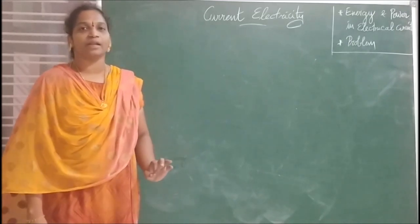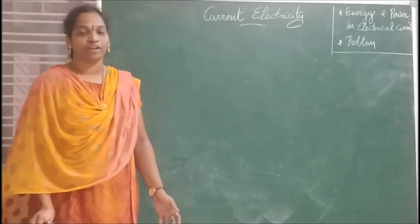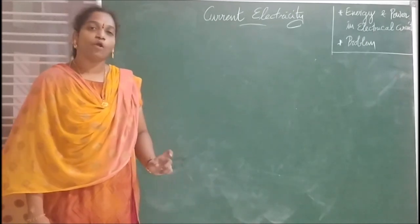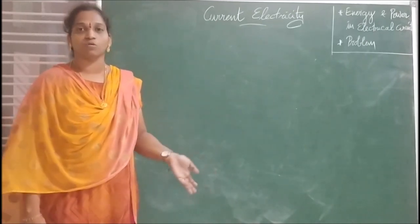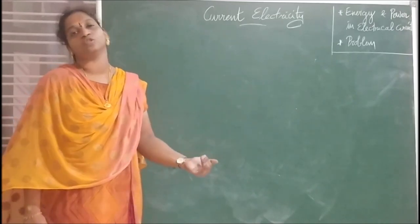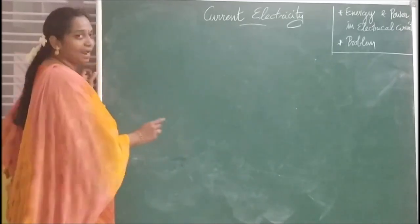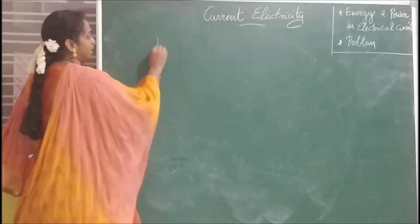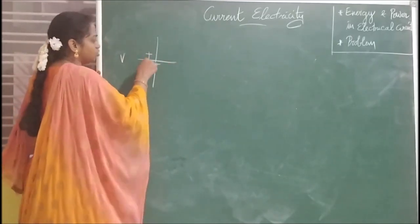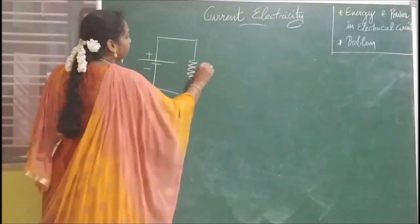Let us consider a battery which has been connected to the ends of a conductor. A current will flow. We already studied that a battery is not a source of electrons, but it transports energy to the circuit. Let us draw a simple circuit with a battery and a resistor. This is a battery connected to a resistor.